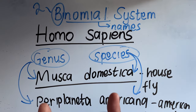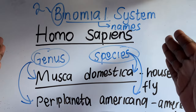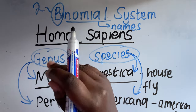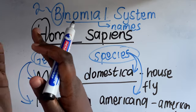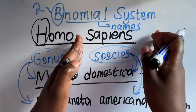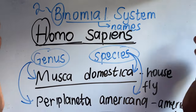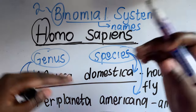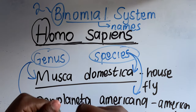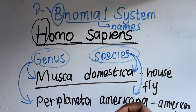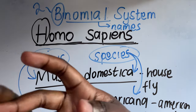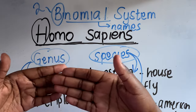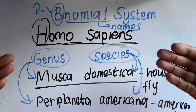What is very important about the binomial system is how you write it. The first name — the genus — starts with an uppercase letter. The second name — the species — is written entirely in lowercase. After writing both names, you underline them. If you are typing, you write them in italics. You are always expected to underline the scientific name of an organism.